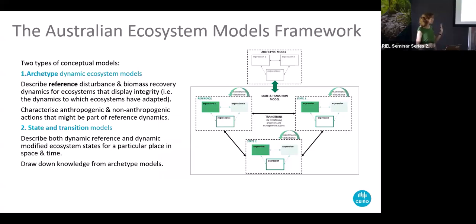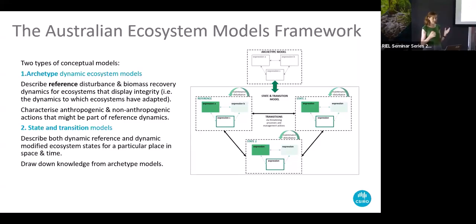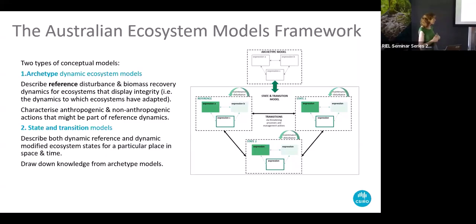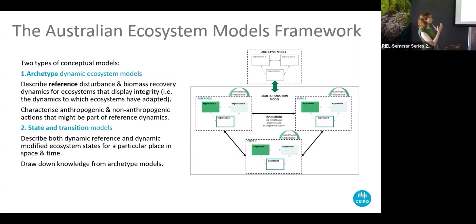The key part of the framework are two models. The first are called Archetype Dynamic Ecosystem Models — a set of reference models for Australia, developed with more than 100 experts. There are 44 models at the moment, and they describe the disturbance and biomass recovery dynamics for ecosystems displaying integrity — the dynamics to which ecosystems have adapted. They include anthropogenic and non-anthropogenic actions that maintain ecological integrity. Often when describing these models, we're describing systems we no longer observe in nature.